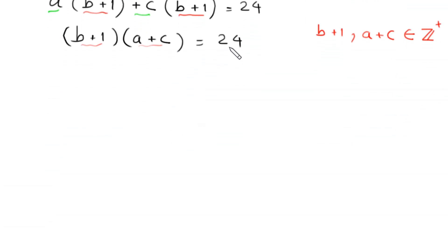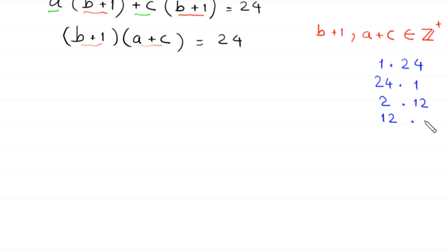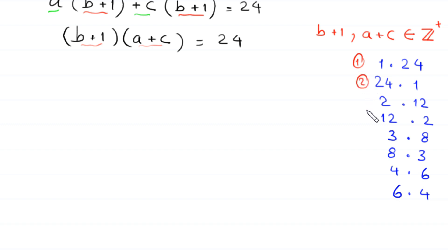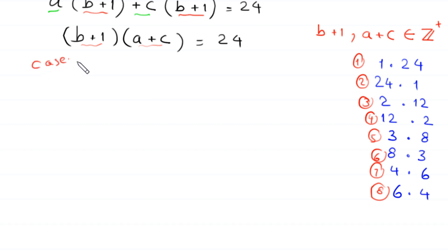So 24 can be factorized as: 1×24, 24×1, 2×12, 12×2, 3×8, 8×3, 4×6, and 6×4. This means we have 8 cases: case 1 through case 8.